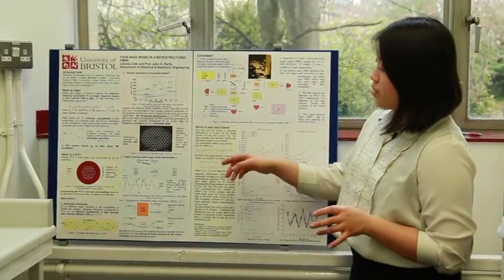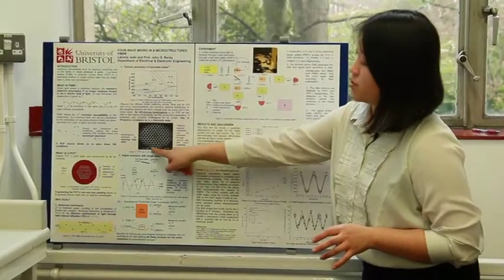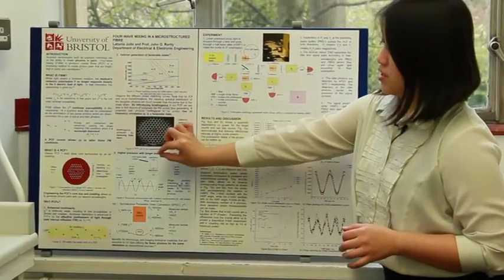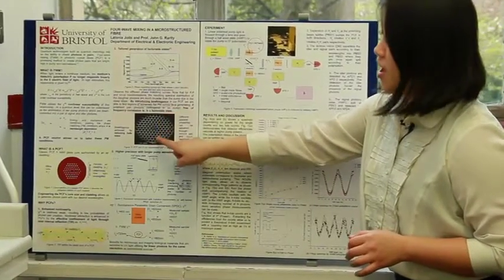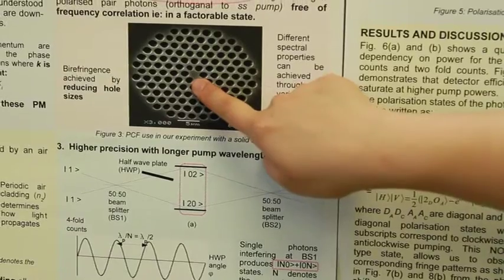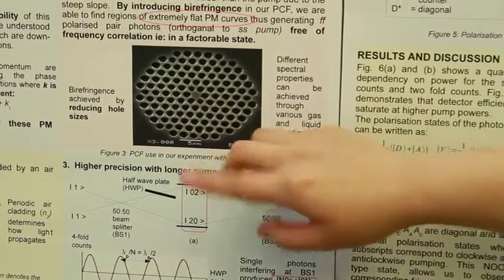Basically the microstructure fiber is this, you can see this here. Because of this really small core, light is confined effectively and it interacts strongly with the glass core. From this interaction we are able to produce photon pairs.